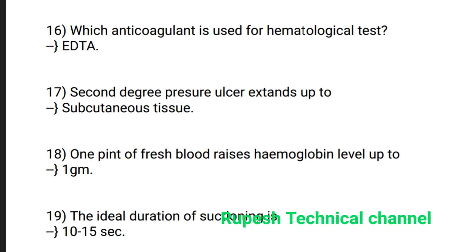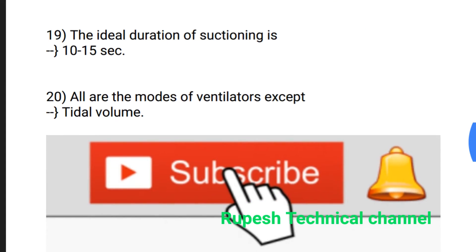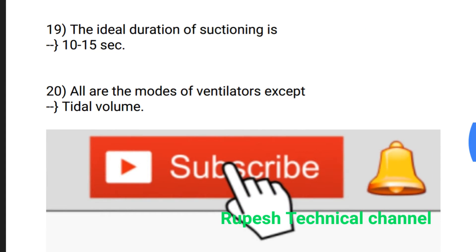Question number 16: Which anticoagulant is used for hematological tests? EDTA. Question number 17: Second degree pressure ulcer extends up to subcutaneous tissue. Question number 18: One unit of fresh blood raises hemoglobin level by 1 gram.